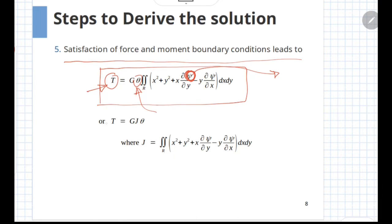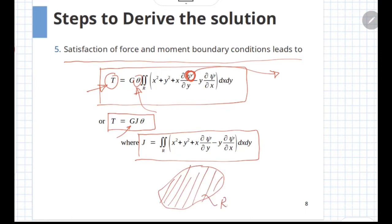The above expression can be simply written in the form T equal to G multiplied by J theta. Here G is the shear modulus. The J is defined in terms of warping function as the area integral - that is whatever your area of cross section, this is the region R over which this area integral is taken and we can find out the value of J.